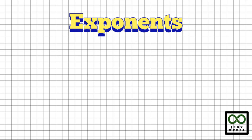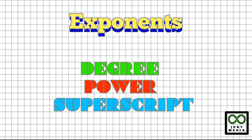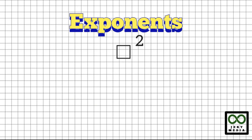An exponent is a number just above and to the right of a character. It is sometimes called a degree, a power, or just a superscript. It could be 2, 3, 5, one-half, one-third. It could also be a root.